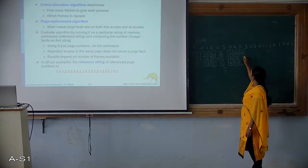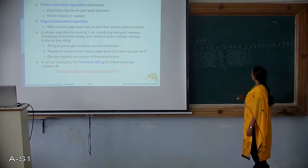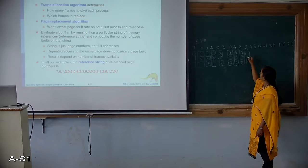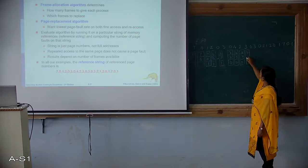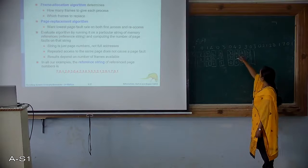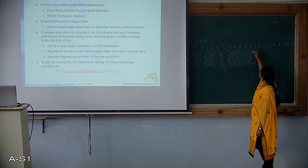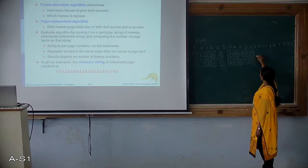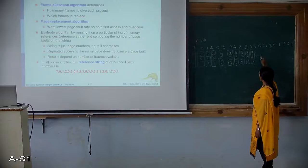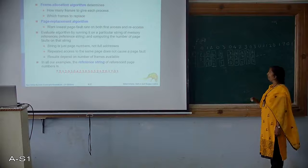So frames now hold 4, 2 and 0. Then we need 3; who is the oldest? 0. So replace 0 with 3. Now we need 0, so replace the oldest page, which is 4, with 0. Then 3 is present — no need of page replacement. 0 is there — no need of page replacement. 2 is there — no need of page replacement.